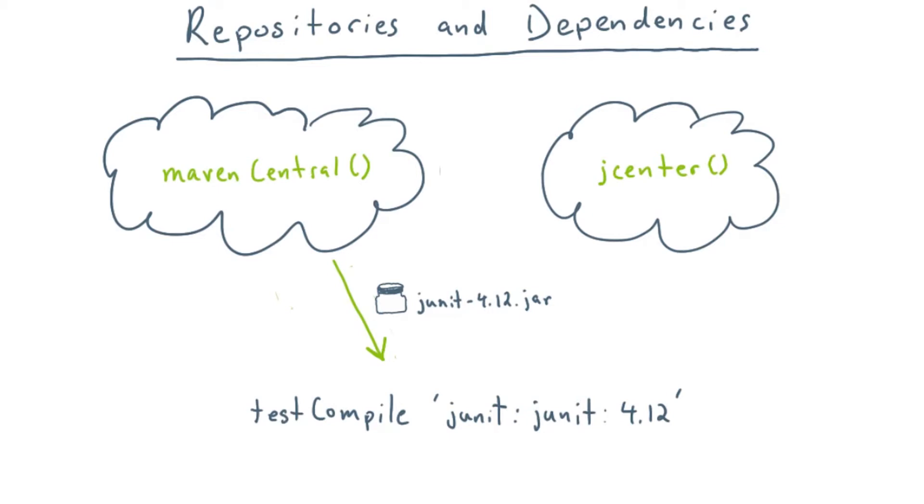The upshot is, Gradle knows how to retrieve artifacts from all sorts of repositories and will store them in a local cache to make them available for your project. Not only that, but if you have multiple projects using the same artifact, it'll only ever be downloaded once.